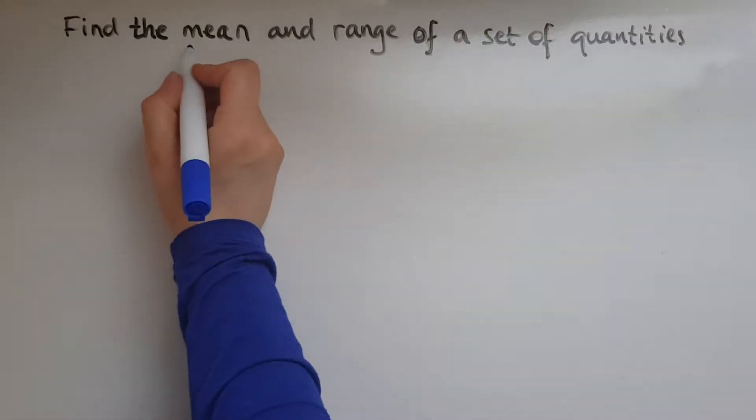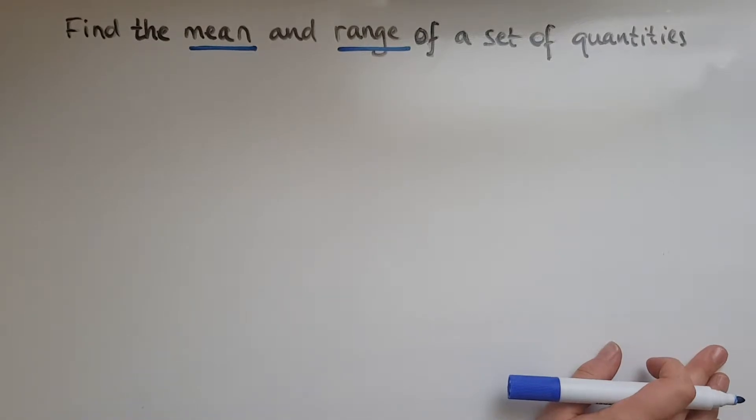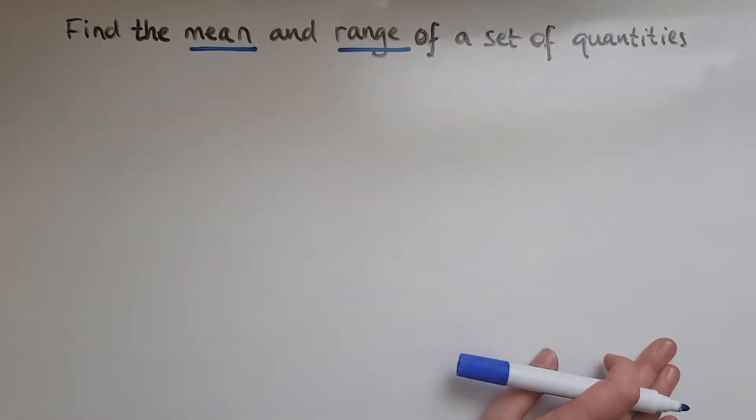In this video we'll learn to find the mean and the range of a set of quantities. When do we use this and what do they mean? Mean and range are types of averages, so we use them to work out maybe the average spending in a week or a month. Things that you'd want to know roughly on average, like a limit value that tells you how much you've spent or earned.